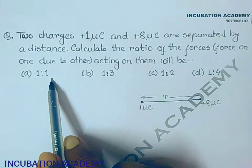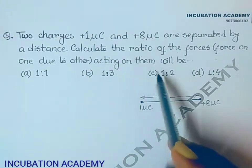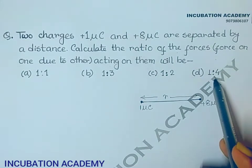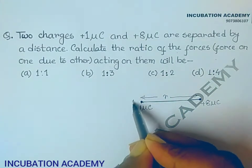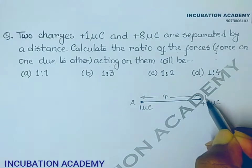The options are 1:1, 1:3, 1:2, and 1:4. Let it is A and it is B.